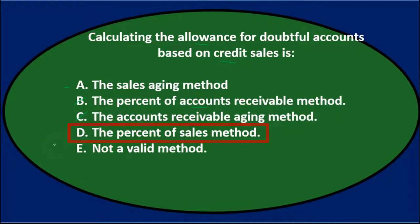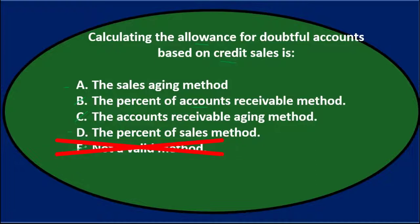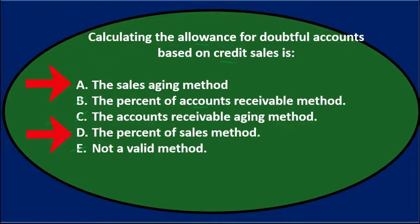D says the percentage of sales method — that focuses on sales, so it looks right. E says not a valid method — it is valid since we can focus on either sales or receivables. We're left with A and D. Calculating the allowance for doubtful accounts based on credit sales is either A, the sales aging method, or D, the percentage of sales method.